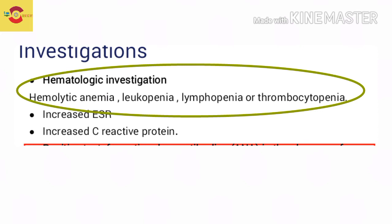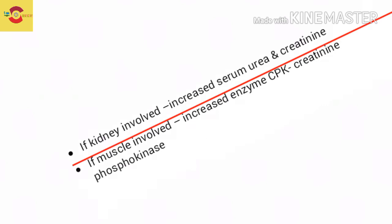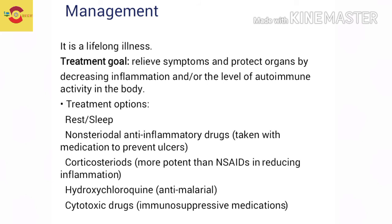Hematological investigations indicate hemolytic anemia, leukopenia, lymphopenia, or thrombocytopenia. Increased ESR as in any inflammation, and increased CRP is also detected. If the kidney is involved, increased serum urea and creatinine are seen; if muscle is involved, increased enzyme CPK (creatinine phosphokinase) is detected.